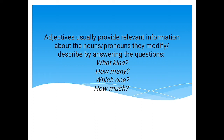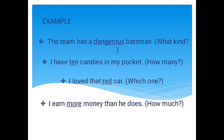For example, 'The team has a dangerous batsman.' In that sentence, dangerous is our adjective because it answers the question: what kind of batsman has the team? Another example: 'I have 10 candies in my pocket' — here it answers how many. 'I love that red car' answers which one. And 'I earned more money than he does' answers how much.